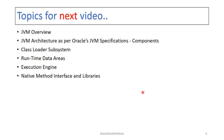In the next video, you can find topics covering JVM overview, then JVM architecture as per Oracle's JVM specifications, then what is the class loader subsystem, runtime data areas, execution engine, native method interface, and libraries — these are the components of JVM which we are going to cover.